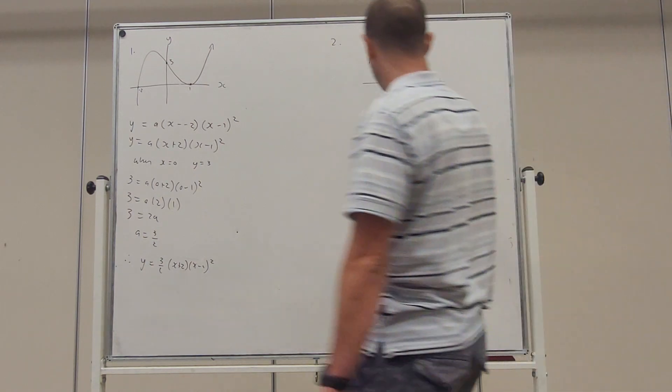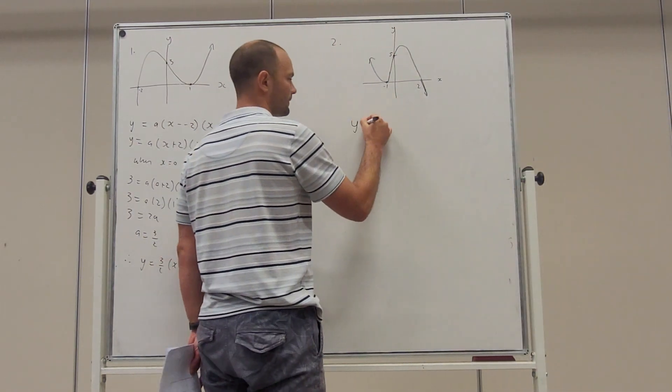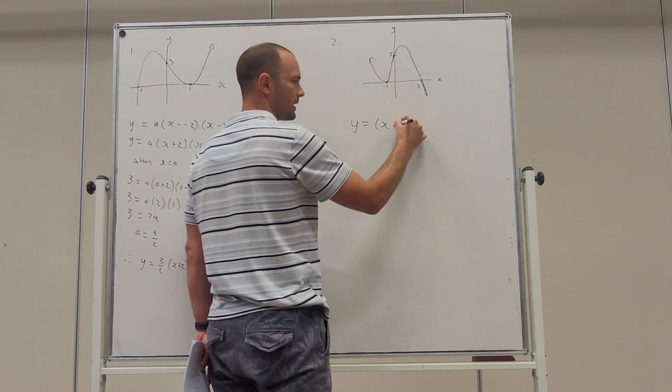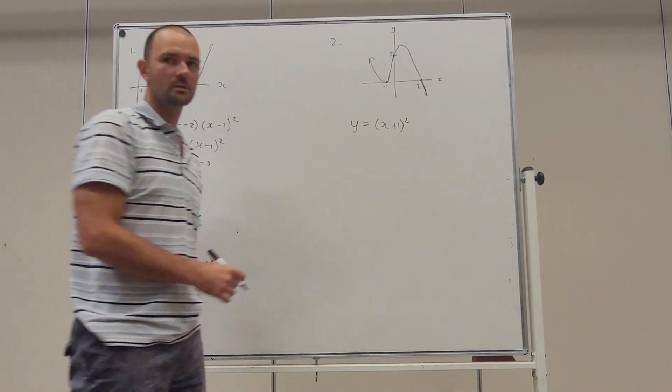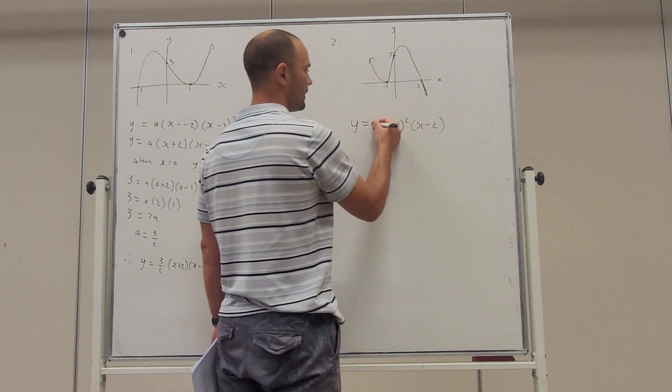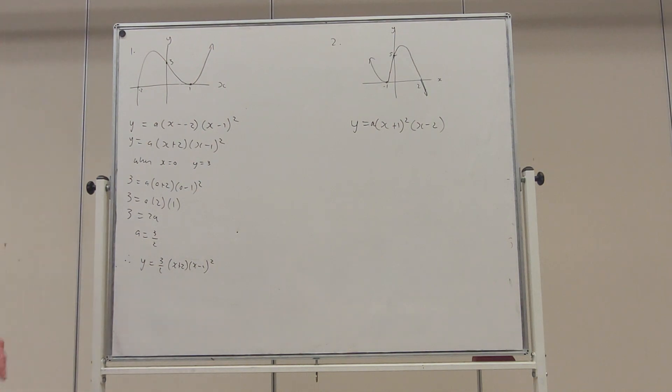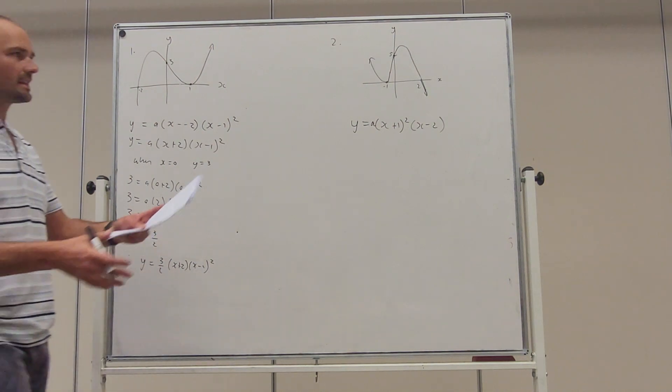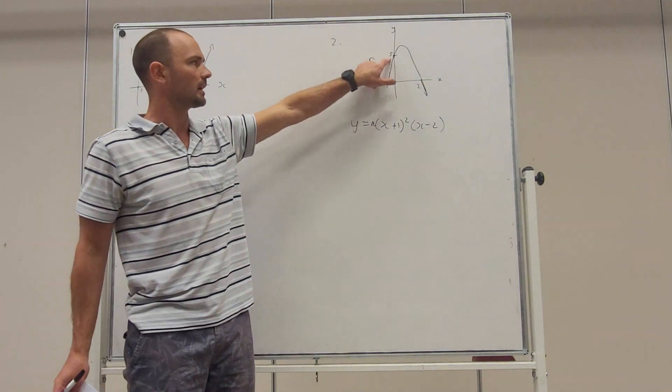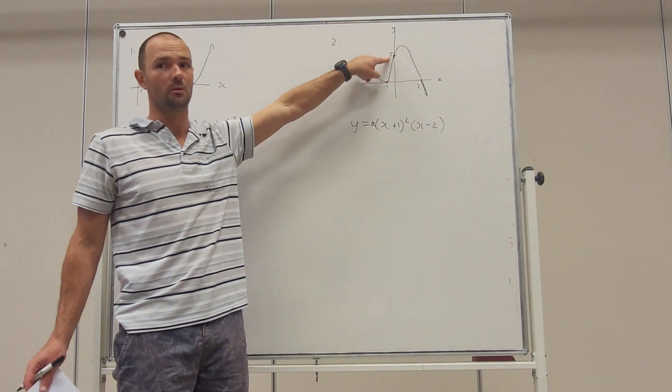Now if we were to find the equation of this one, we would have x take minus one squared, so x plus one squared - it touches at minus one - and cuts at two. We always put a out the front. A is the dilation factor and it affects how much it's stretched. We could go through and find a by plugging in that coordinate when x is zero, y is five.